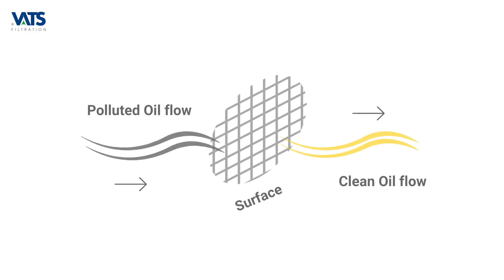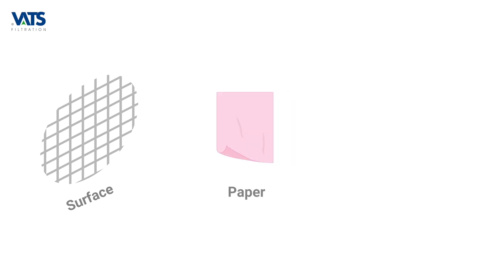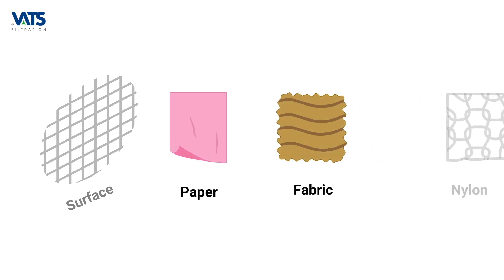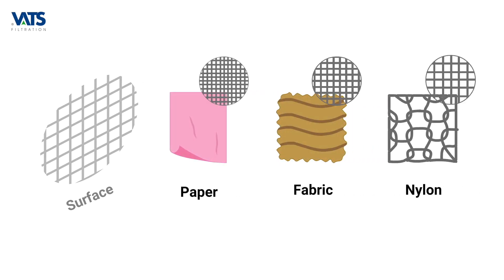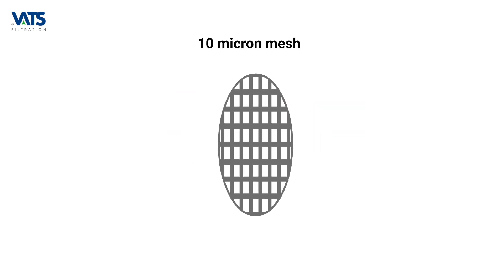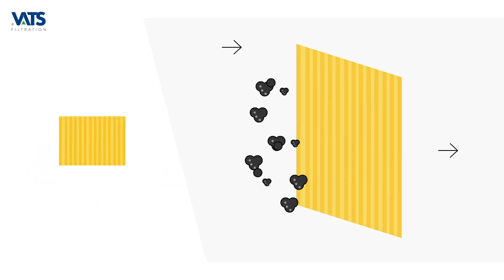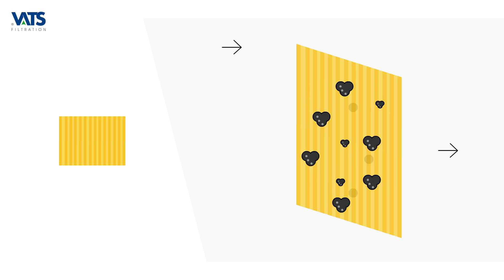The simplest way to begin understanding the filtration process is to visualize a simple surface filter — just a sheet of paper, fabric, or nylon. The mesh size of the sheet will decide the particle size removal threshold. So if you use a 10-micron mesh size, particles above 10 microns will be retained and particles smaller than this will pass through.